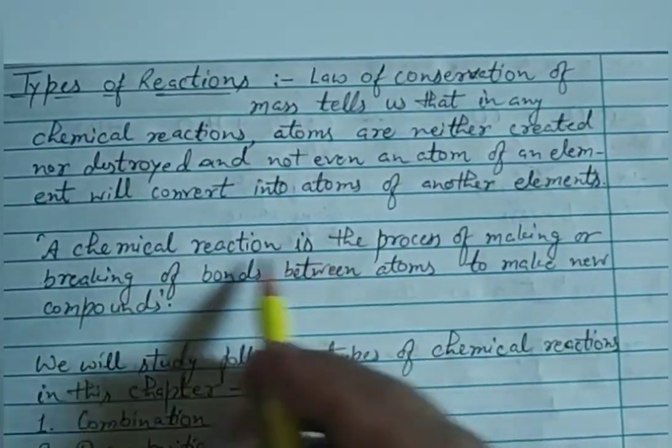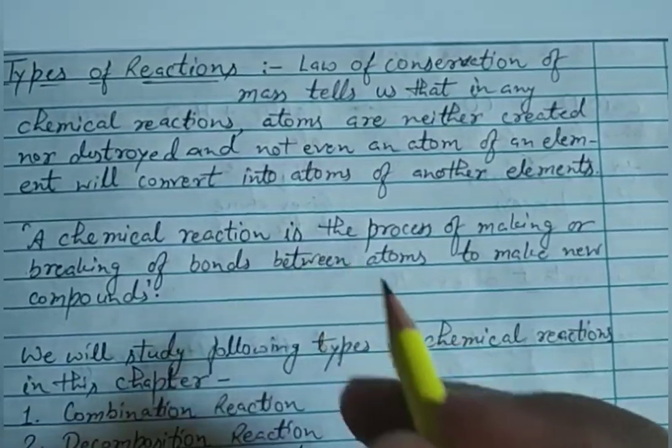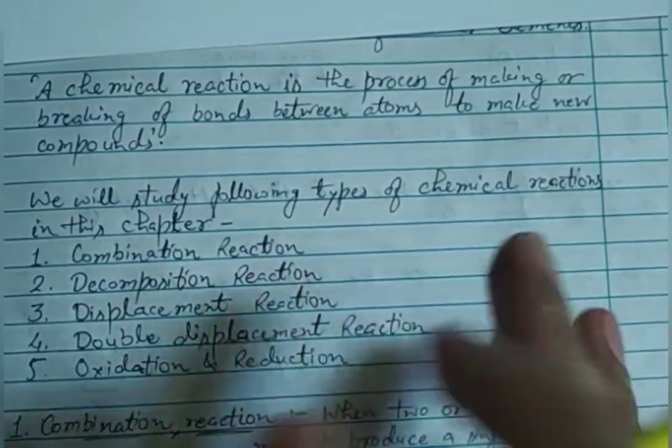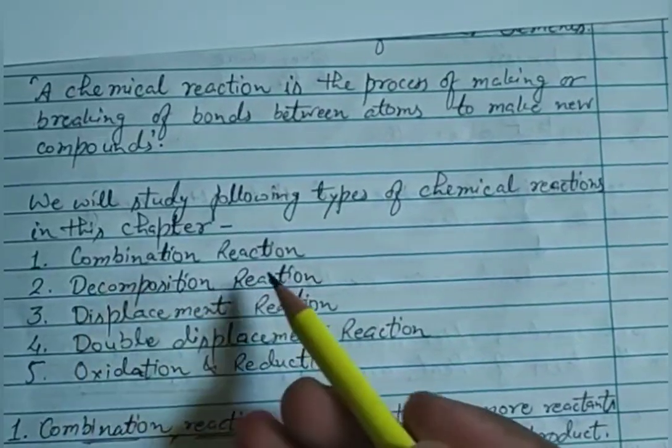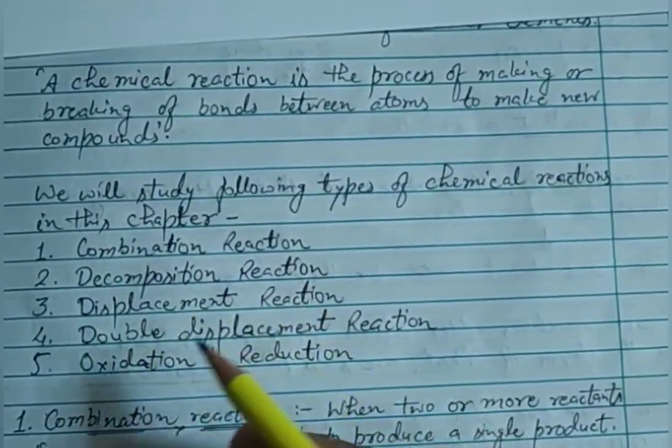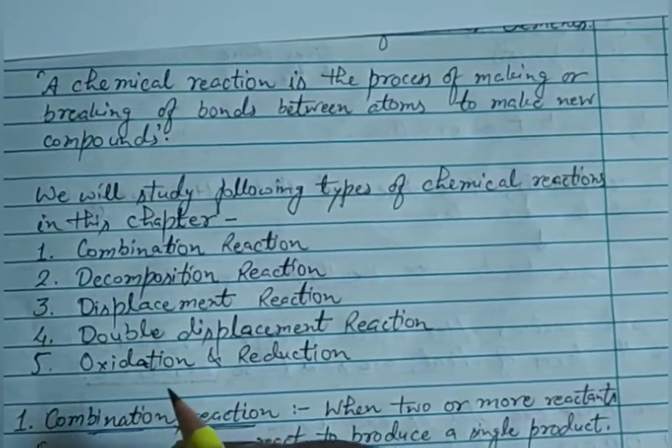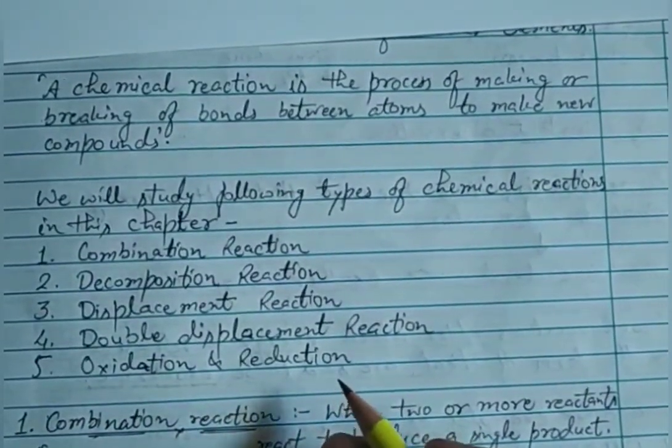In this chapter, we will study the following types of chemical reactions: combination reaction, decomposition reaction, displacement reaction, double displacement reaction, and oxidation-reduction reaction.